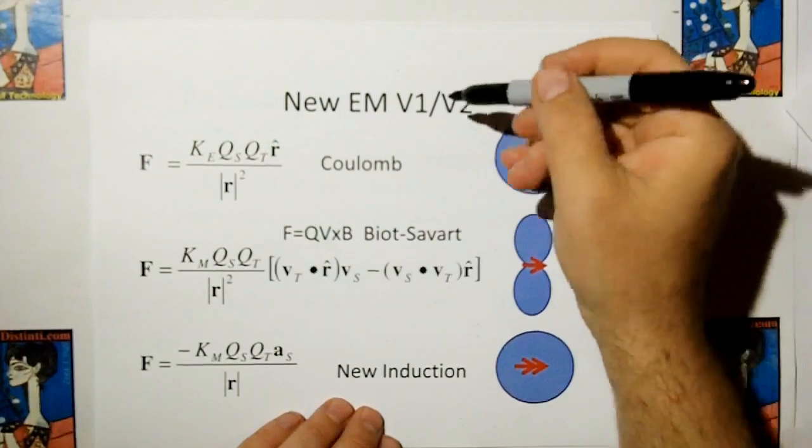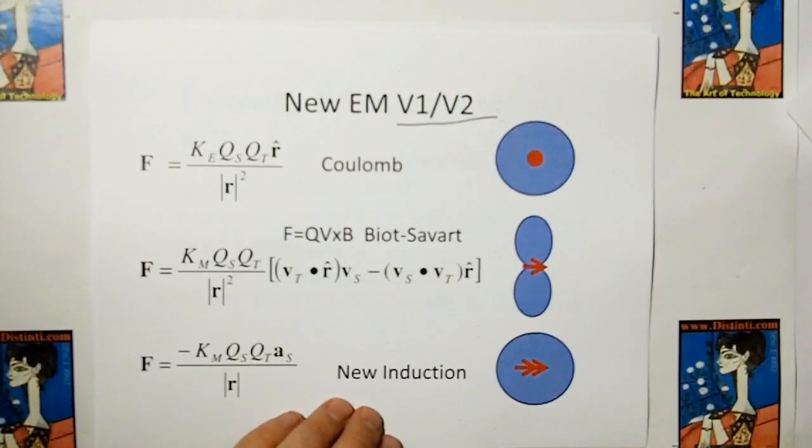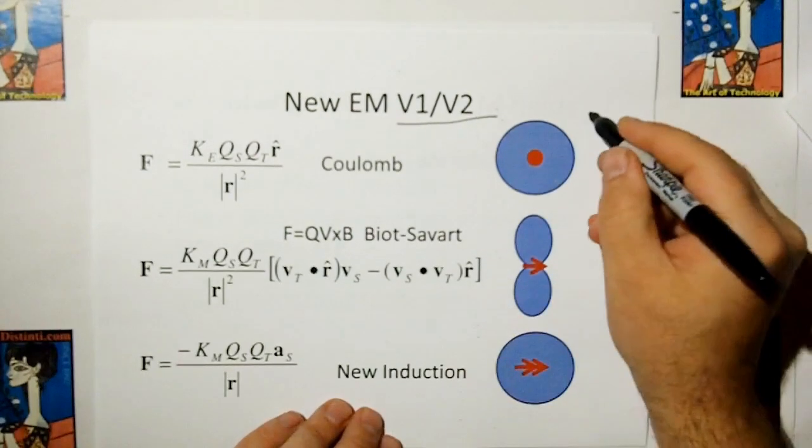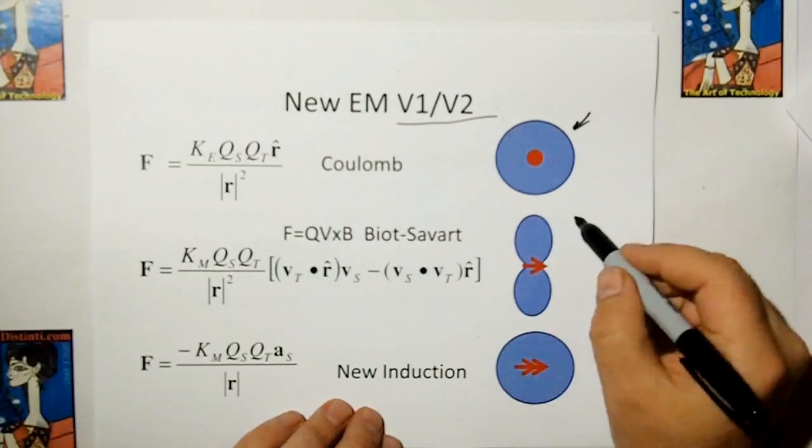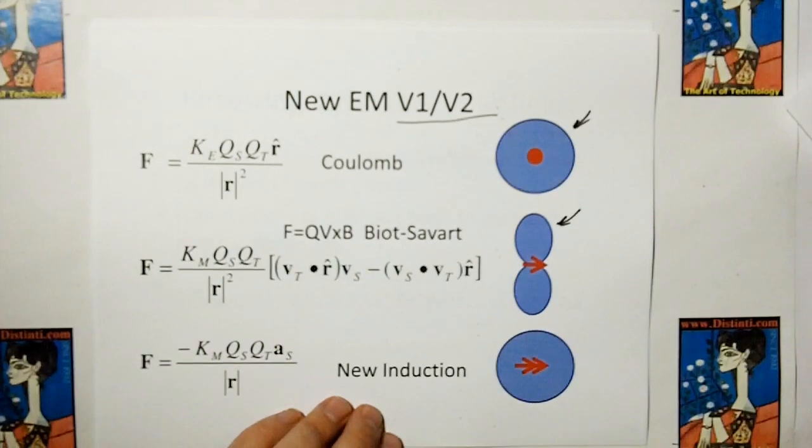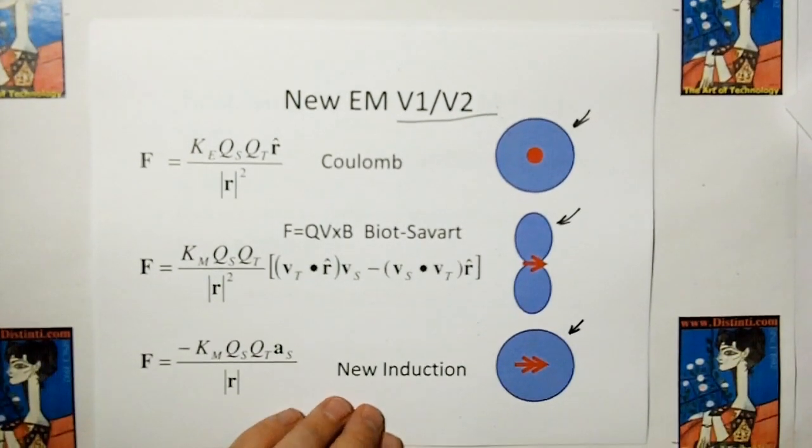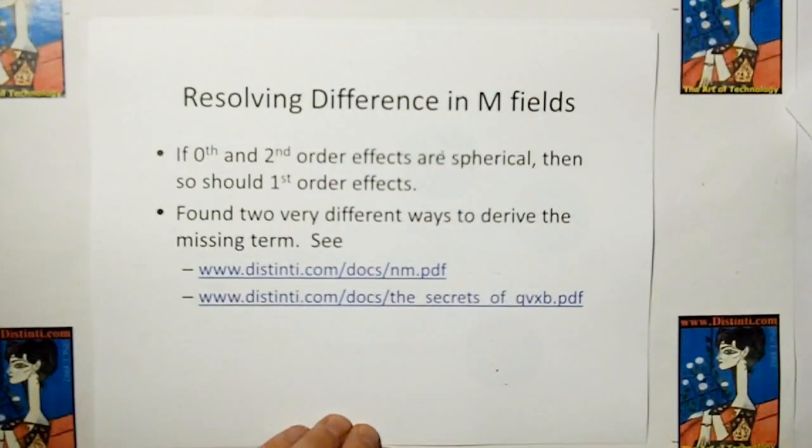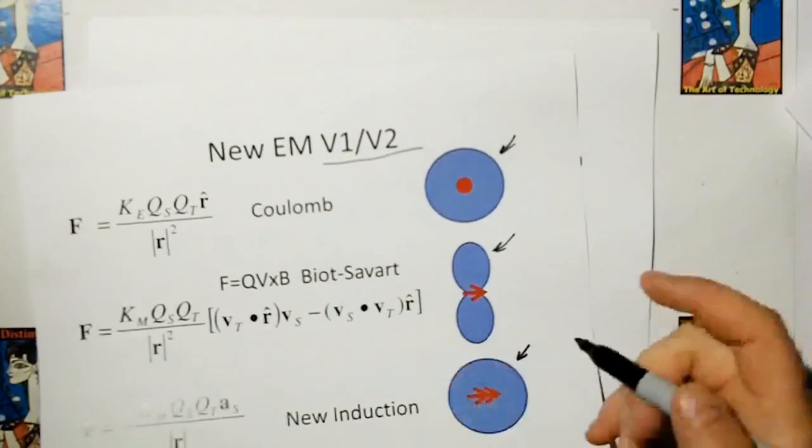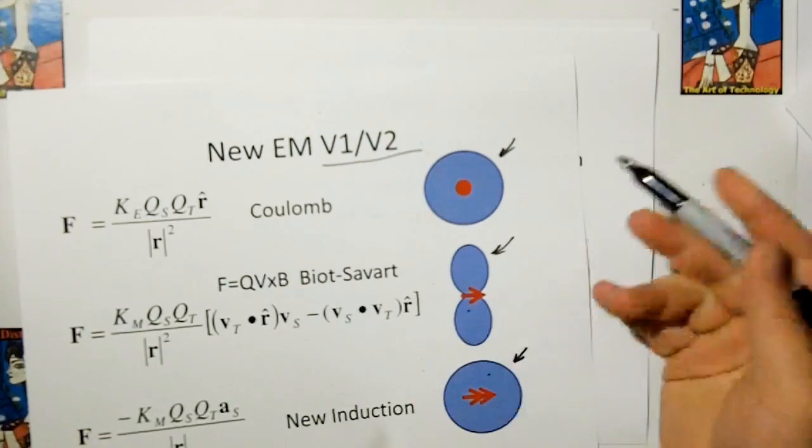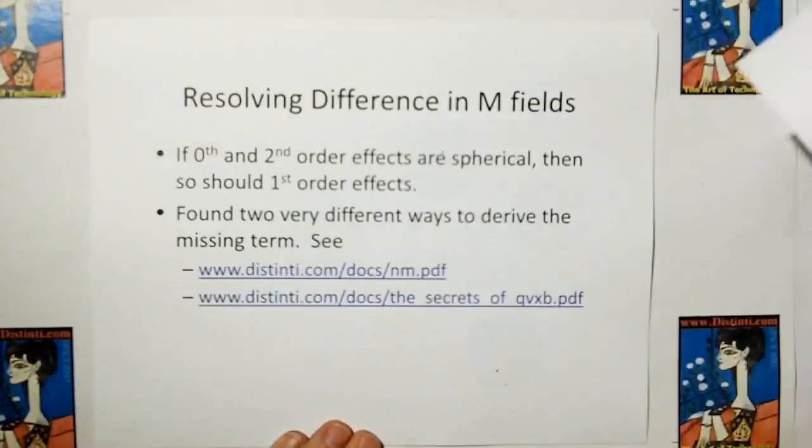So what do we have? So the new electromagnetism, V1, V2. We have Coulomb's law intact. We keep F equals QV cross B intact. And we include now the new induction model for the second order effects. But here's the problem. If you notice now that this is a magnetic field and this is a magnetic field, but they're not the same magnetic field. What's going on here?